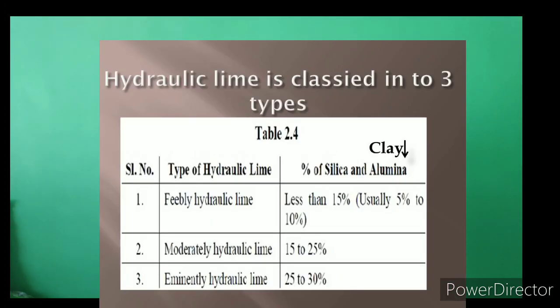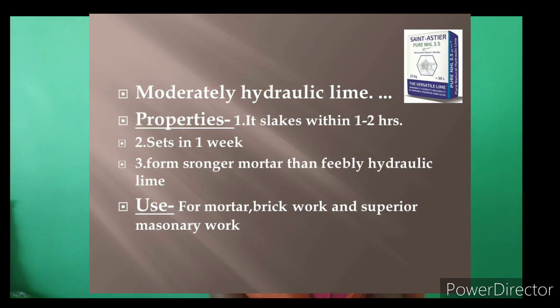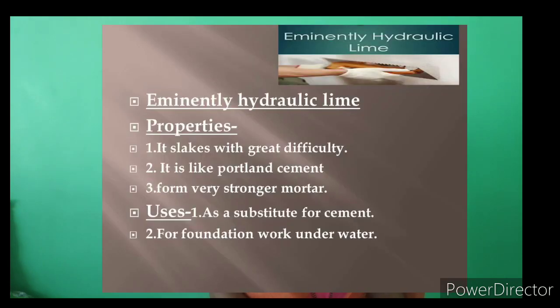Hydraulic lime is classified into three types based on the percentage of clay (silica and alumina). Feebly hydraulic lime slakes slowly (within 50–60 minutes), sets in 2–3 weeks, makes good mortar, and is used for ordinary masonry work. Moderately hydraulic lime slakes within 1–2 hours, sets in one week, forms stronger mortar, and is used for mortar brickwork and superior masonry work.